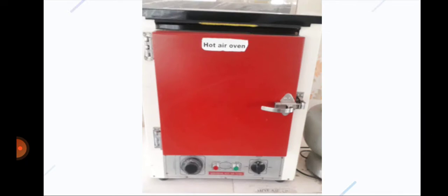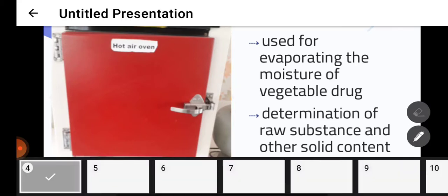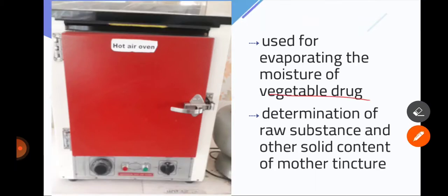What is hot air oven used for? It is used for evaporating the moisture of vegetable drug, and the second function is the determination of raw substance and other solid contents of mother tincture. So whatever raw material is used for mother tincture, hot air oven is used to make it pure.